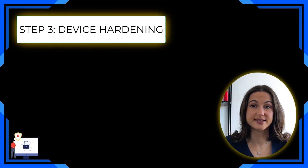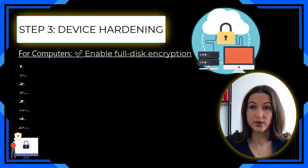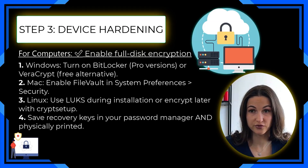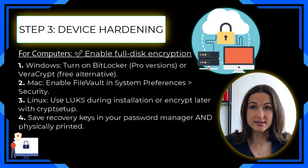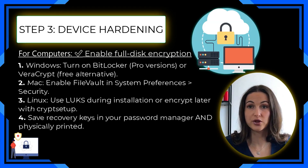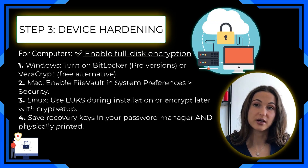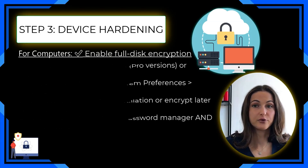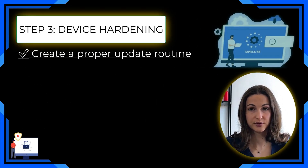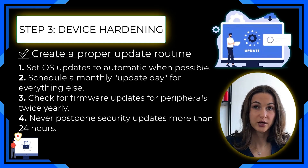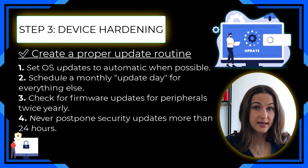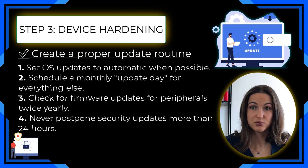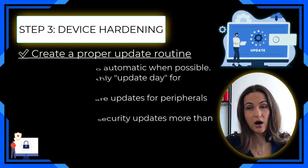Step number three: device hardening. Your devices need security checkups too. For computers, enable full disk encryption — on Windows, turn on BitLocker or VeraCrypt as a free alternative; on Mac, enable FileVault in System Preferences; on Linux, use LUKS during installation or encrypt later with CryptSetup. Save recovery keys in your password manager and print them physically. Next, create a proper update routine: set OS updates to automatic when possible, schedule a monthly update day for everything else, check firmware updates for peripherals, and never postpone security updates more than 24 hours.